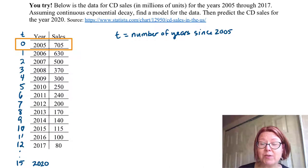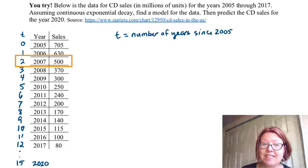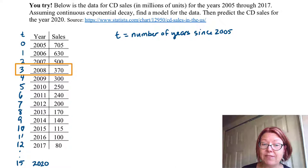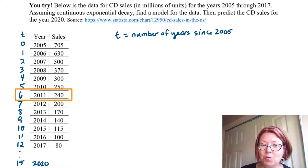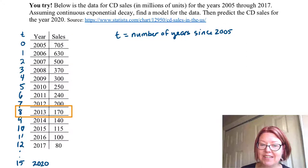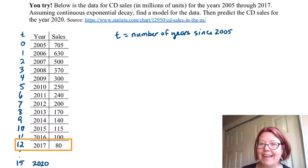When t is 0, sales are 705. t=1, sales 630. t=2, sales 500. t=3, sales 370. t=4, sales 300. t=5, sales 250. t=6, sales 240. t=7, sales 200. t=8, sales 170. t=9, sales 140. t=10, sales 115. t=11, sales 100. t=12, sales 80.